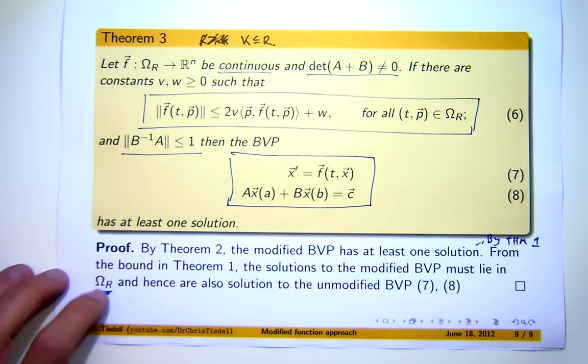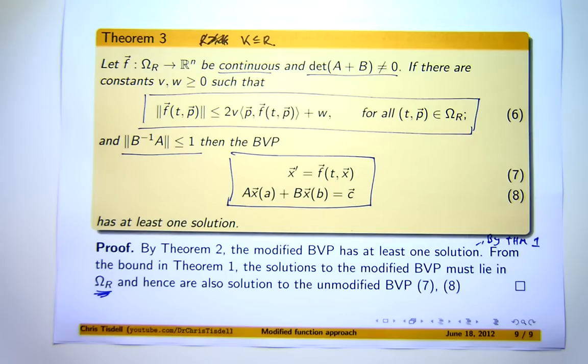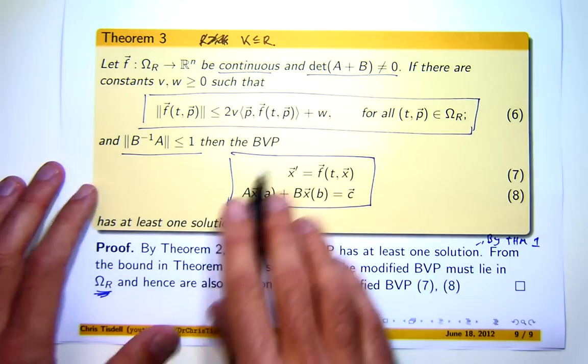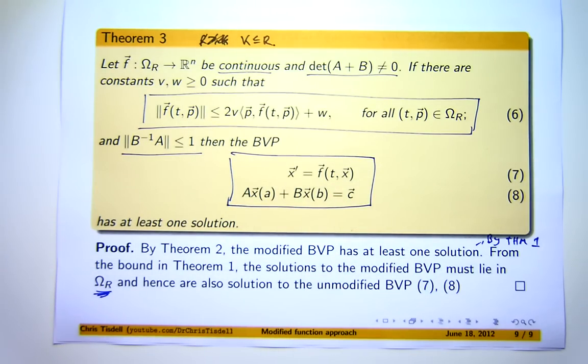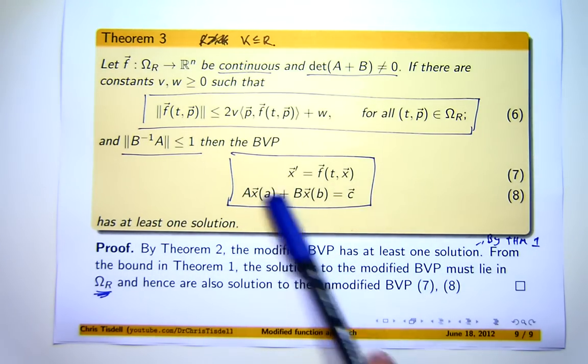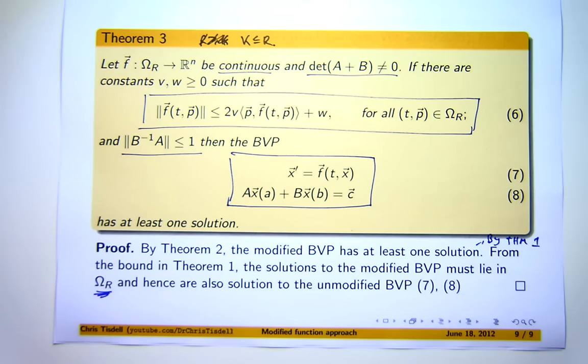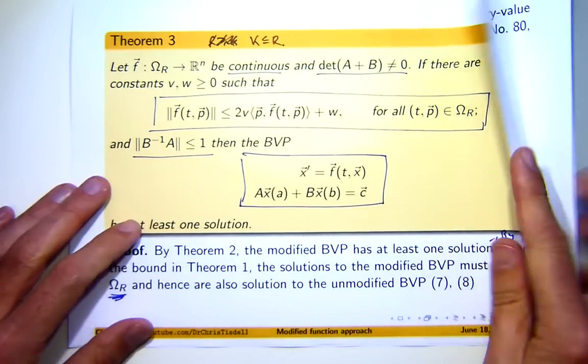So, what is big F in this set? Well, it's equal to little f. So, a solution to the modified problem exists. The solutions lie where big F is essentially the same as little f. Therefore, those functions must also satisfy this boundary value problem. So, therefore, we've proved that this problem has at least one solution.